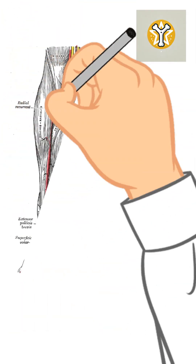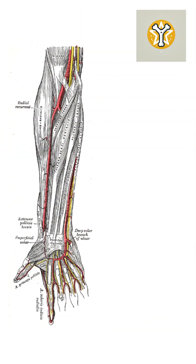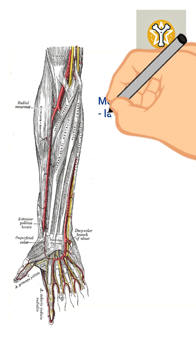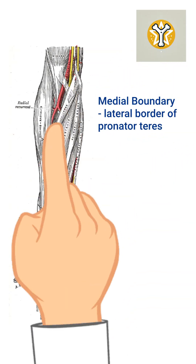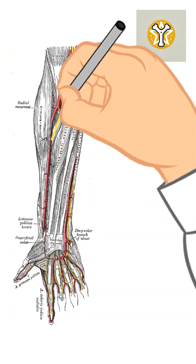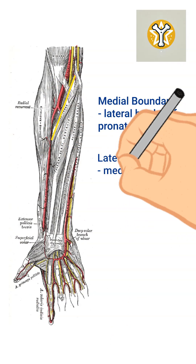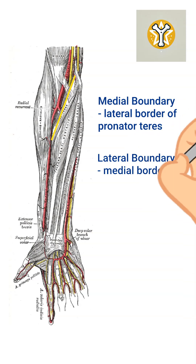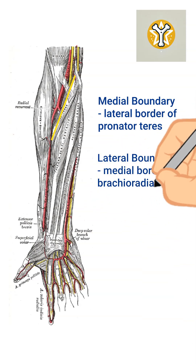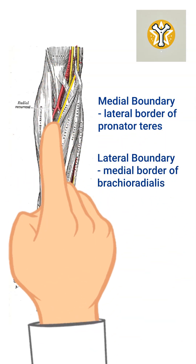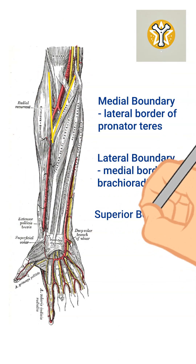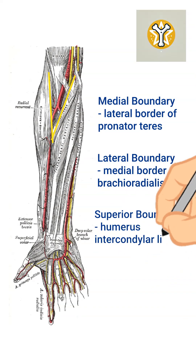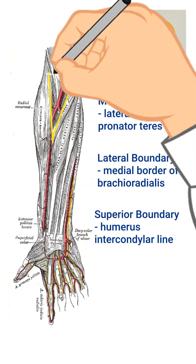Starting with boundaries, it's shaped like a triangle. The medial boundary is the lateral border of pronator teres. The lateral boundary is the medial border of brachioradialis, and superiorly there is a line that connects the humeral epicondyles.